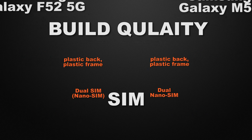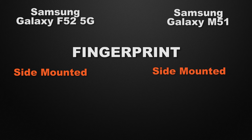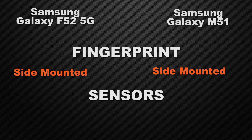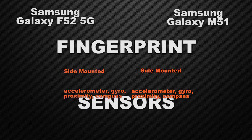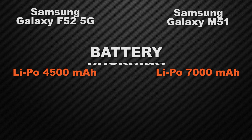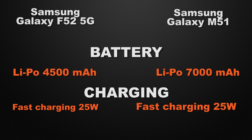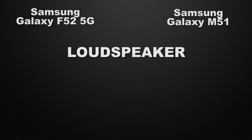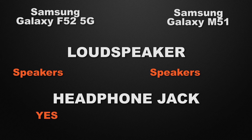Both devices support dual nano SIM — a tie. Both have side-mounted fingerprint scanners — a tie. Both include accelerometer, gyroscope, proximity, and compass sensors — a tie. The F52 has a 4500mAh battery while the M51 has a massive 7000mAh battery, so M51 wins. Both support 25W fast charging — a tie. Both have normal speakers and a 3.5mm headphone jack — ties on both.